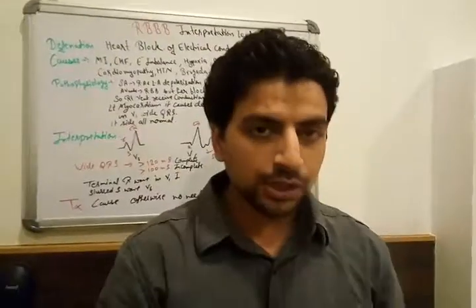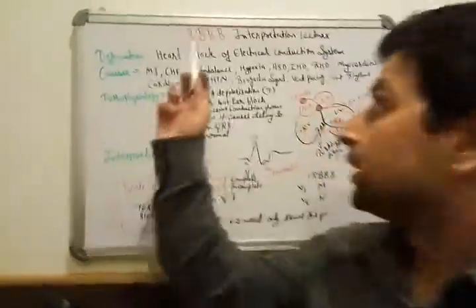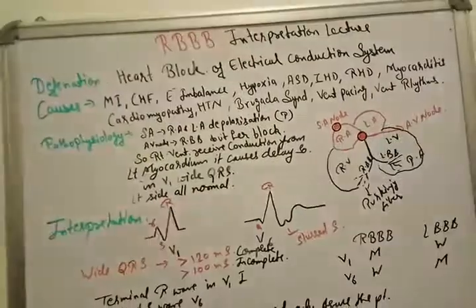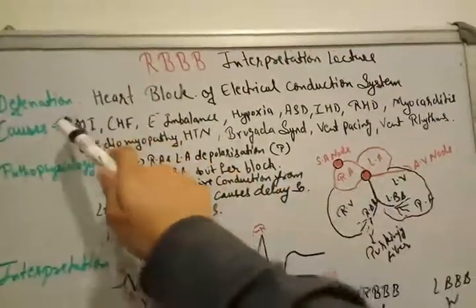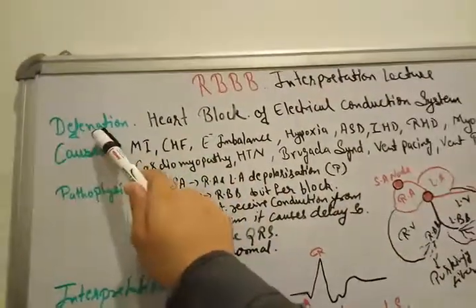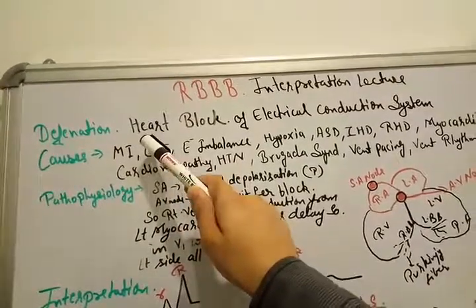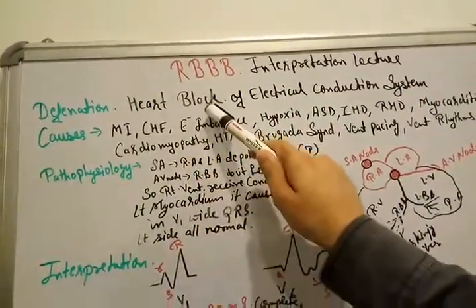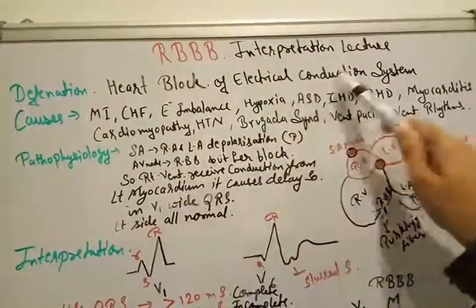Good evening, myself Dr. Heban Sharma and today I am going to explain the right bundle branch block interpretation lecture. First, we have to be very clear about what is the definition of right bundle branch block. It is the heart branch block of the electrical conduction system.